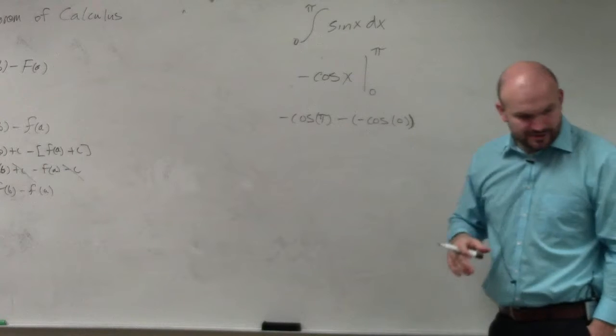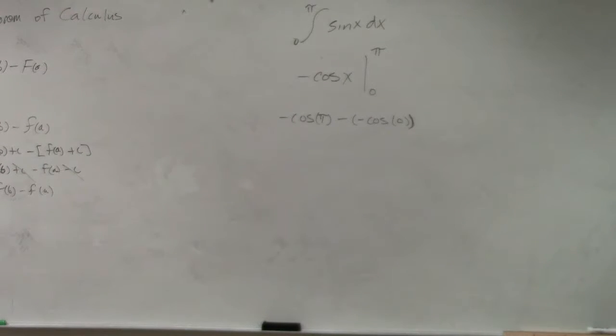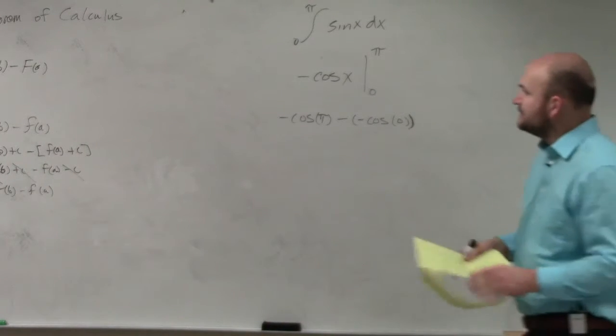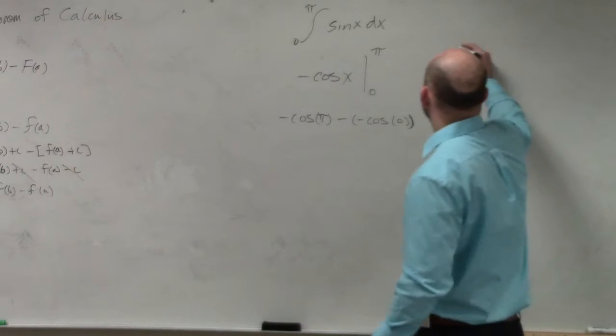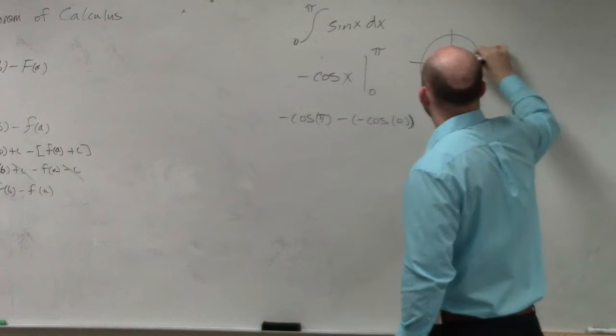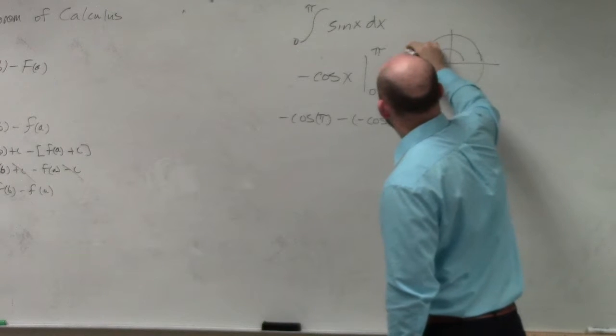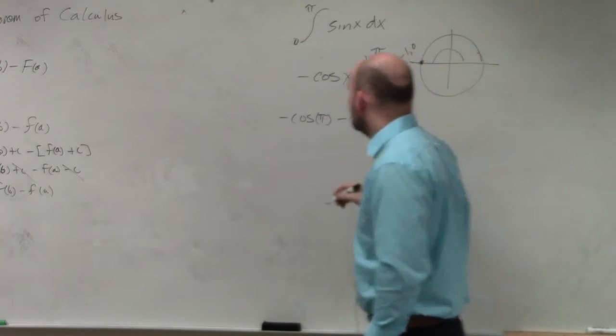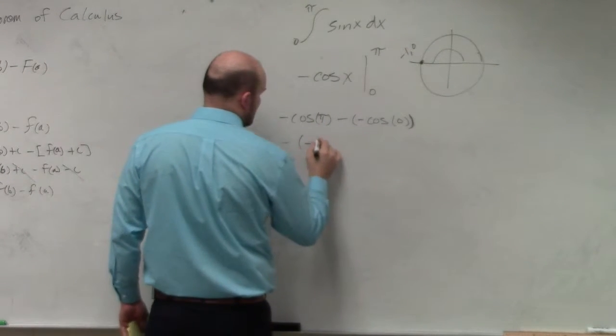Now we need to evaluate each of these. If we look at the unit circle, at pi we're looking at the point negative 1, 0. So we're going to have minus a negative 1.